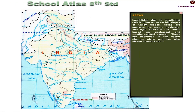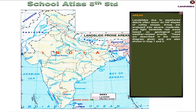Landslides due to weather debris often occur on hill slopes or valley slopes. Areas are analyzed into severe, moderate and light landslide risk areas based on geological and weather-related events. These are described in the vector diagram given and are also shown in Map 1 and Map 2.